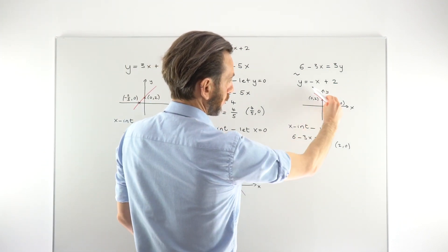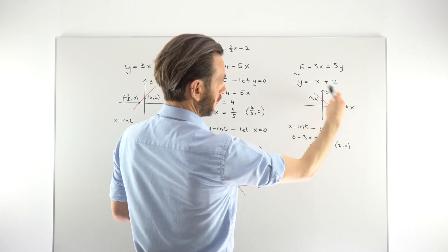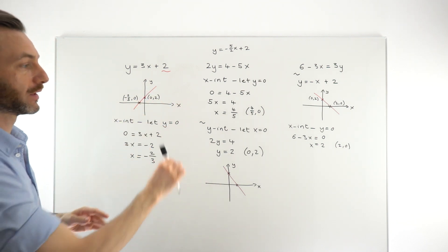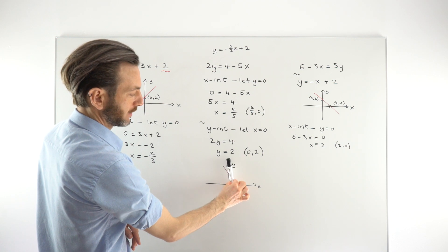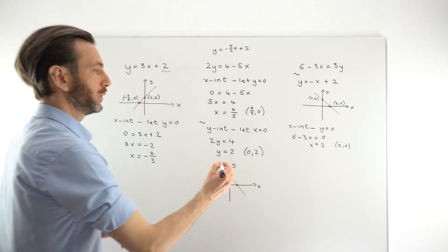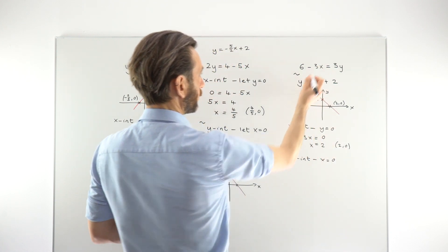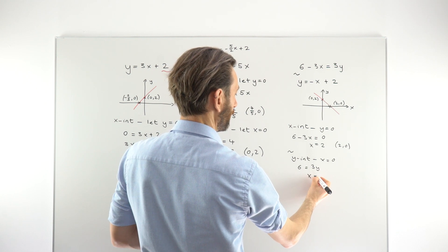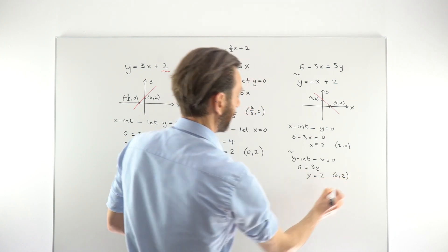If that x-intercept point is at 2 and it's a 45-degree line, the y-intercept has to be at 2 as well — that's just the geometry. If the y-intercept were at 5 and the line was 45 degrees sloping down, the x-intercept would also be at 5. For the y-intercept, letting x be 0, we get 6 equals 3y, and dividing both sides by 3 gives y equals 2. So the full coordinate, as expected, is (0, 2).